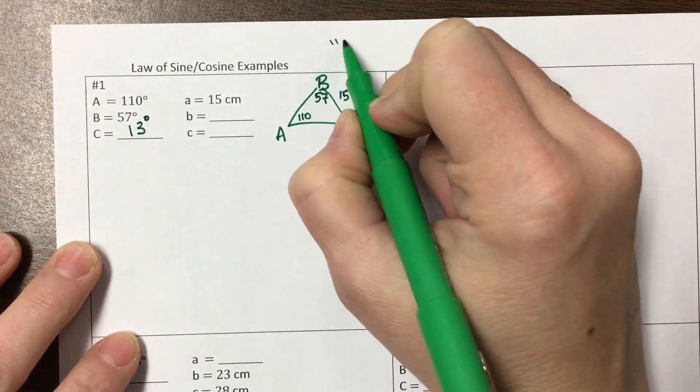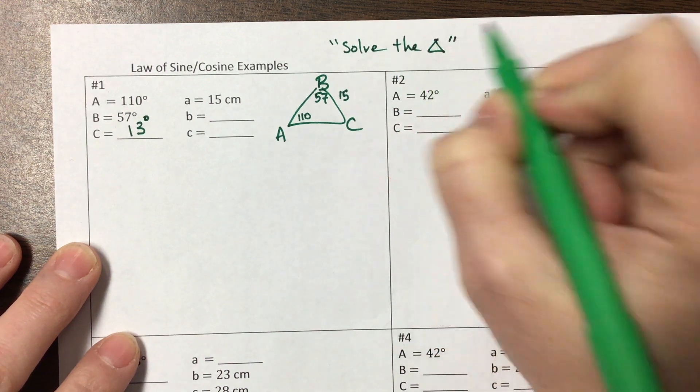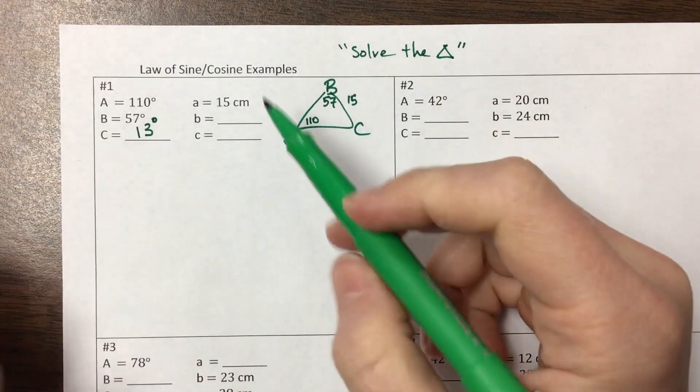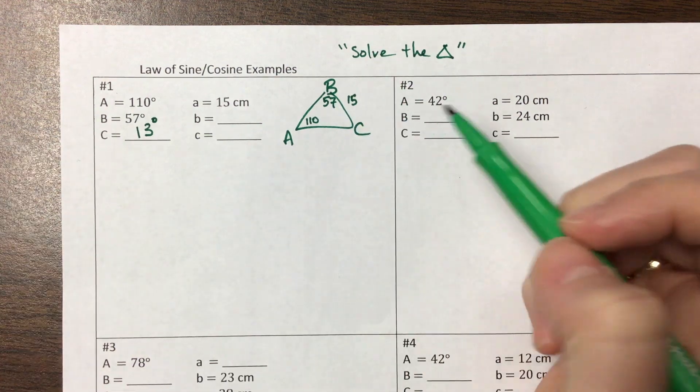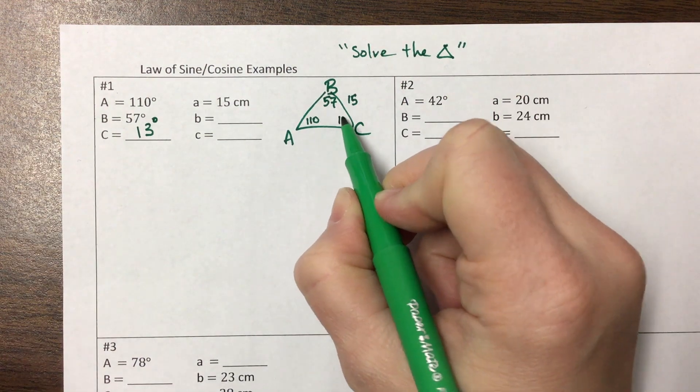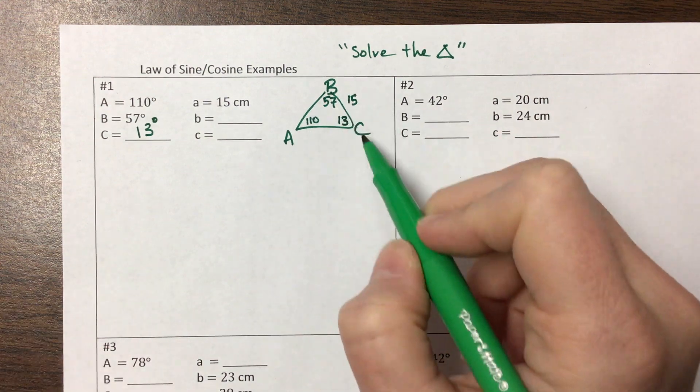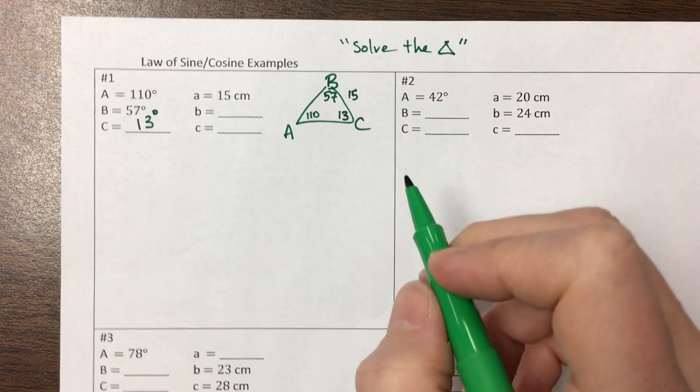Sometimes they'll tell you to solve the triangle. And if they say something like solve the triangle, what they mean is they want you to find all six pieces of information, all three angles and all three sides. So on this one, I know all of my angles and I know one side length. So I want to use the law of sines.